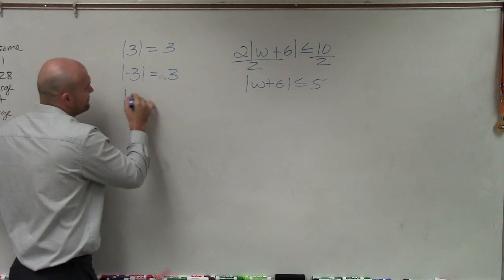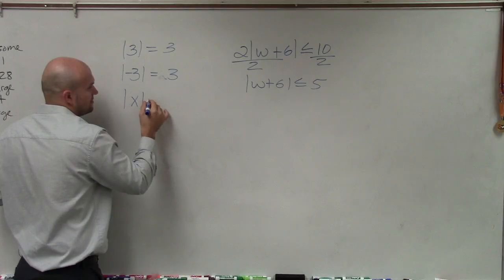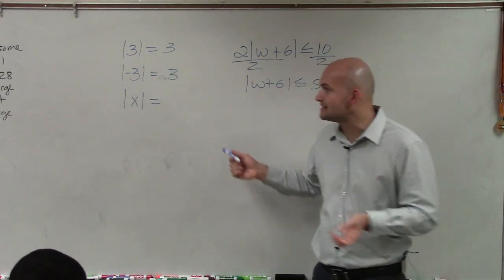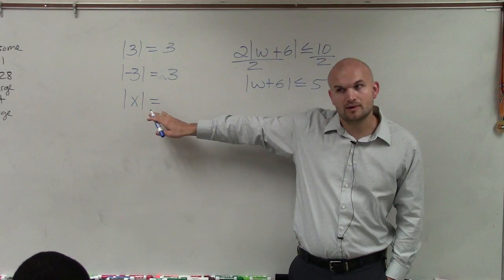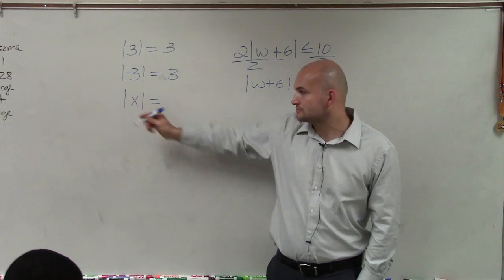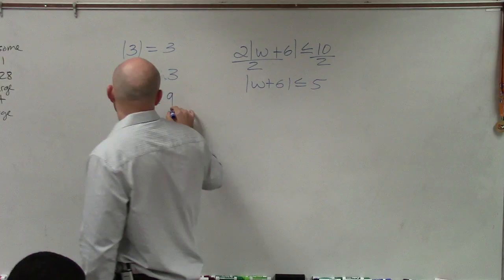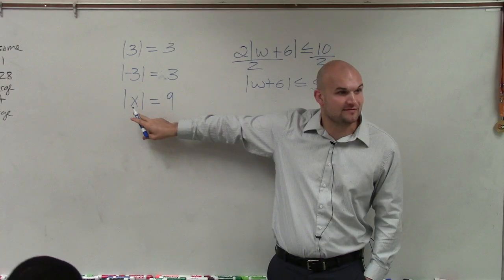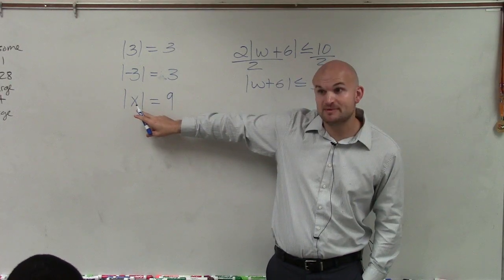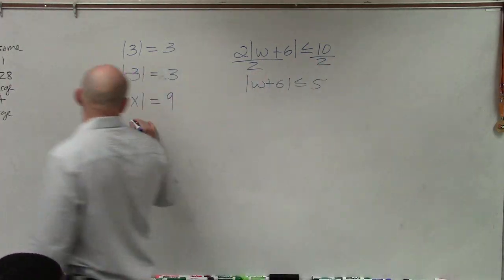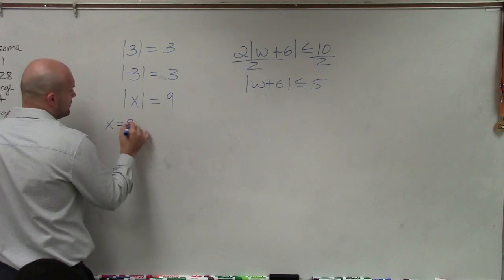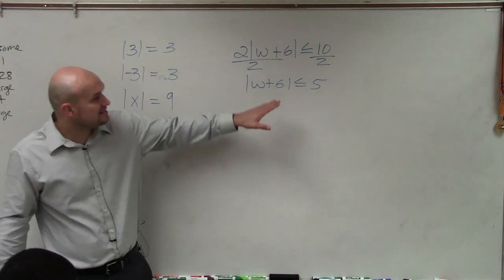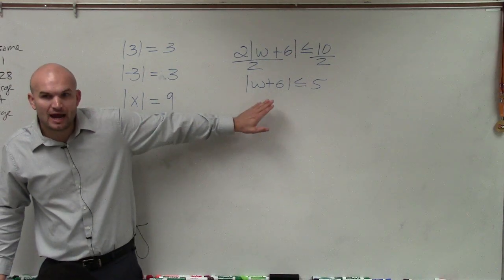So if I have the absolute value of x, what I want you guys to understand is the absolute value of x, there could be two numbers that could be in there, right? Let's say absolute value of x equals 9. What that means is, is it possible for x to be negative 9? Is it possible for x to be positive 9? Yeah. So when you have an absolute value, you have to create what we call two cases. But you can only create two cases once you have solved for your absolute value.